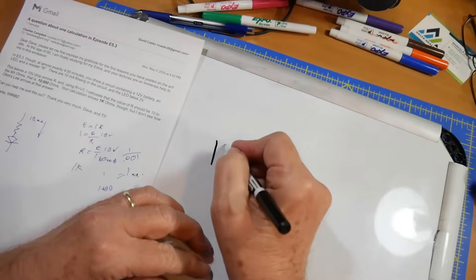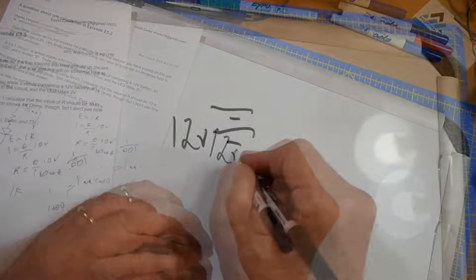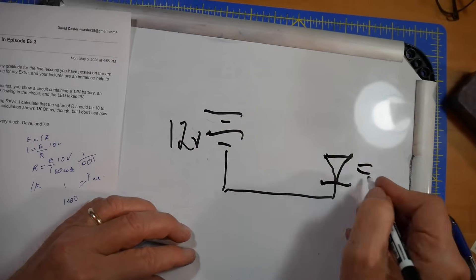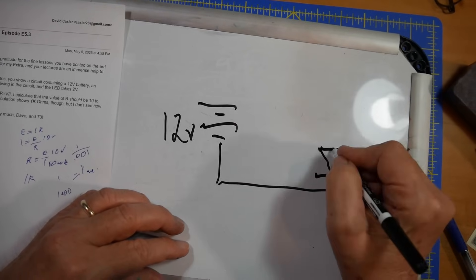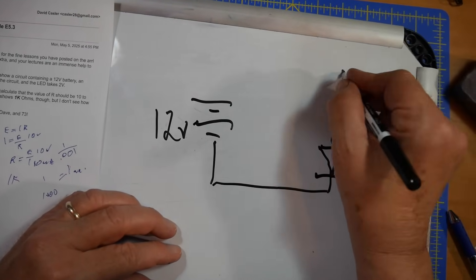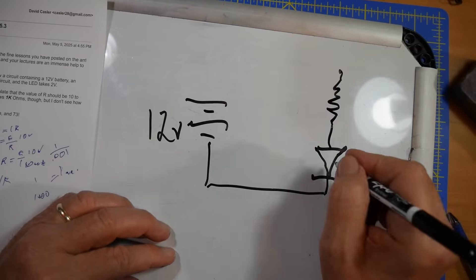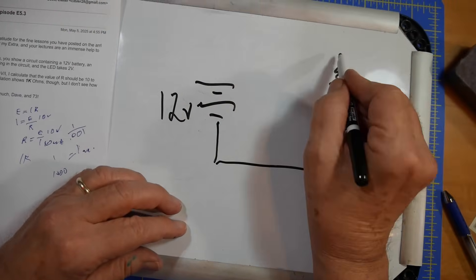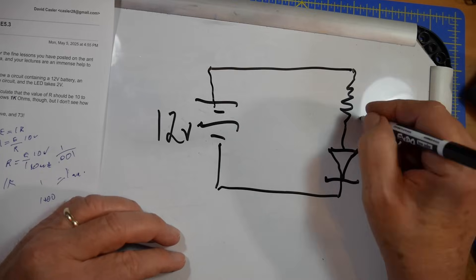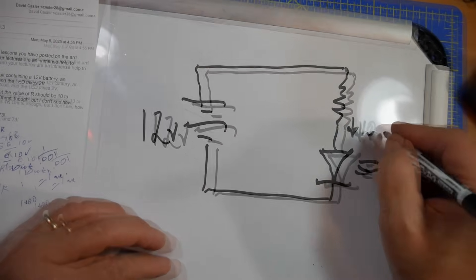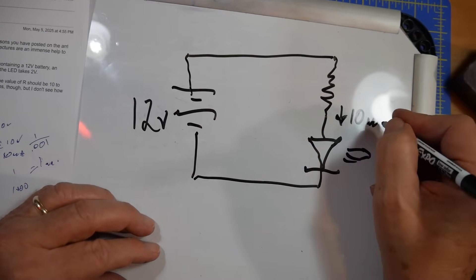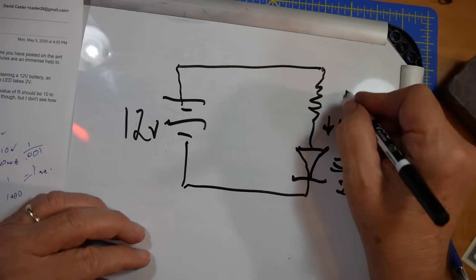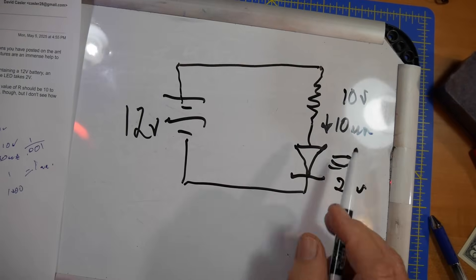We've got a 12-volt battery going to an LED — which has light emitting from it — and then there's a current-limiting resistor. These are current-driven devices; if you just apply voltage to them they'll burn out. So we have a current of 10 milliamps. There are two volts across the LED, which means there are 10 volts across the resistor.